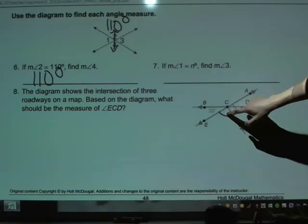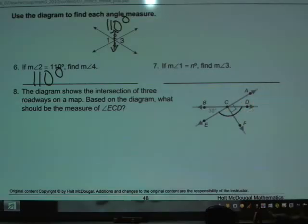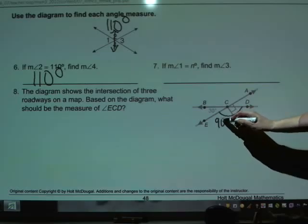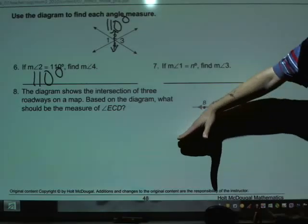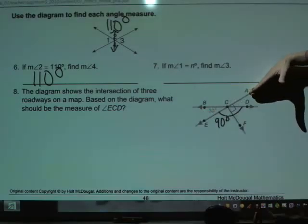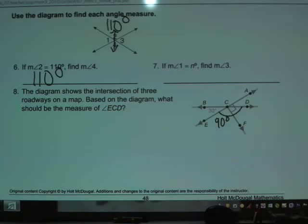Now, this angle right here, as you can see, makes that classic L shape that we talked about earlier. So that has to be 90 degrees. Now, how could we prove that? Well, remember that this here is a line, a straight line, or a straight angle. So that's got to be 180 degrees by definition.